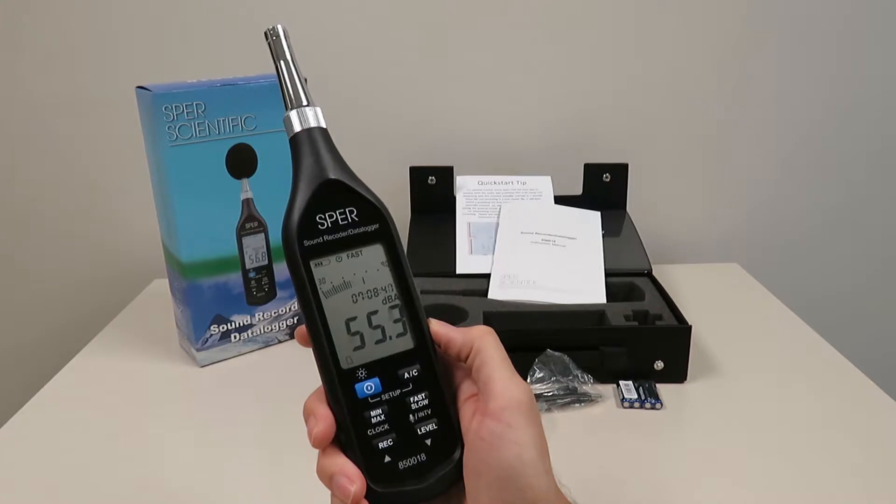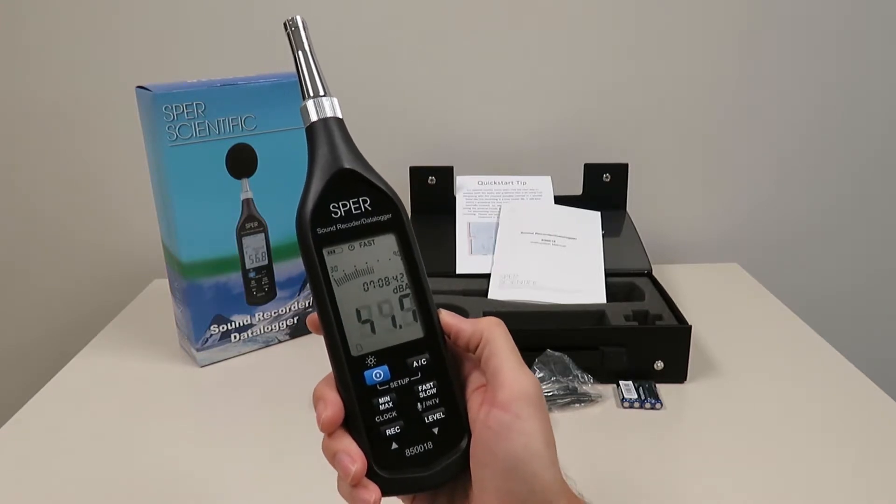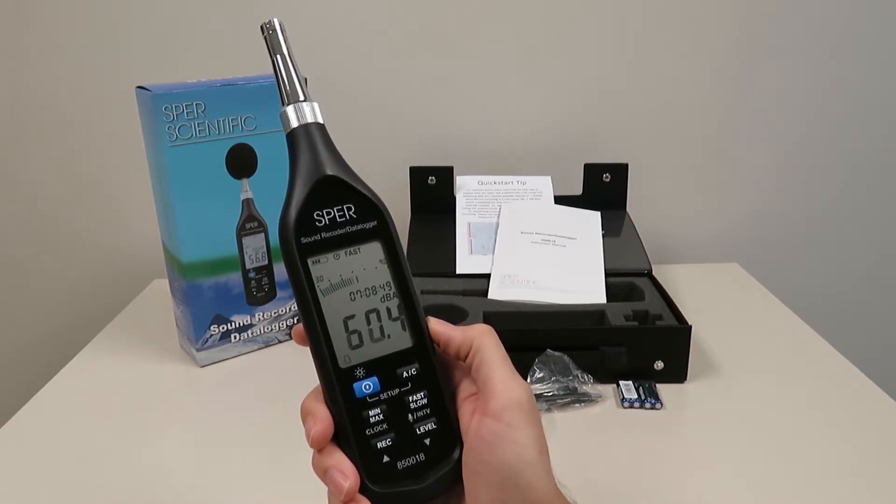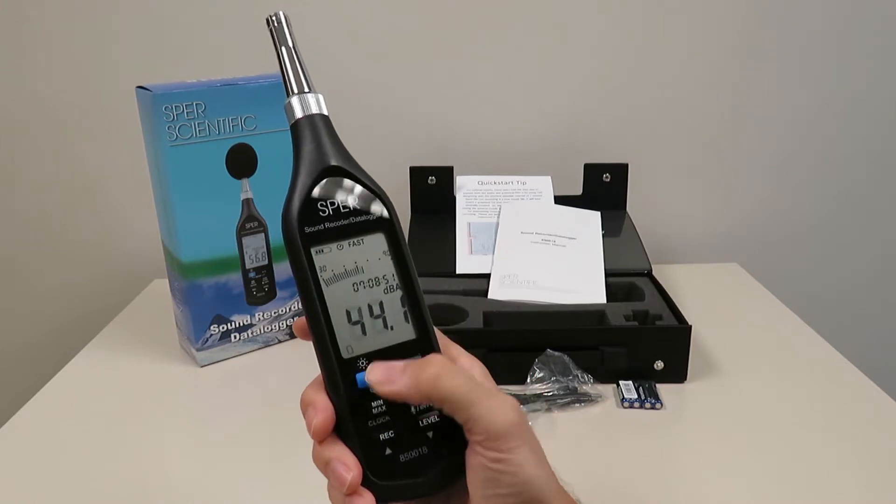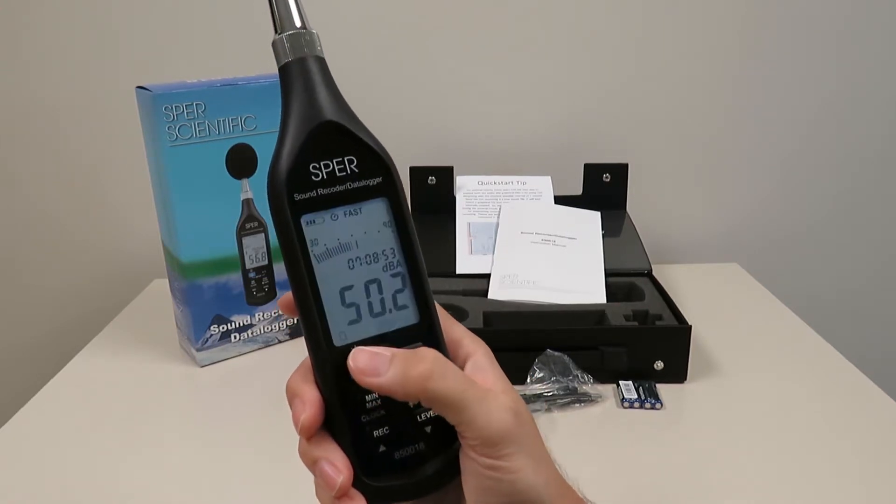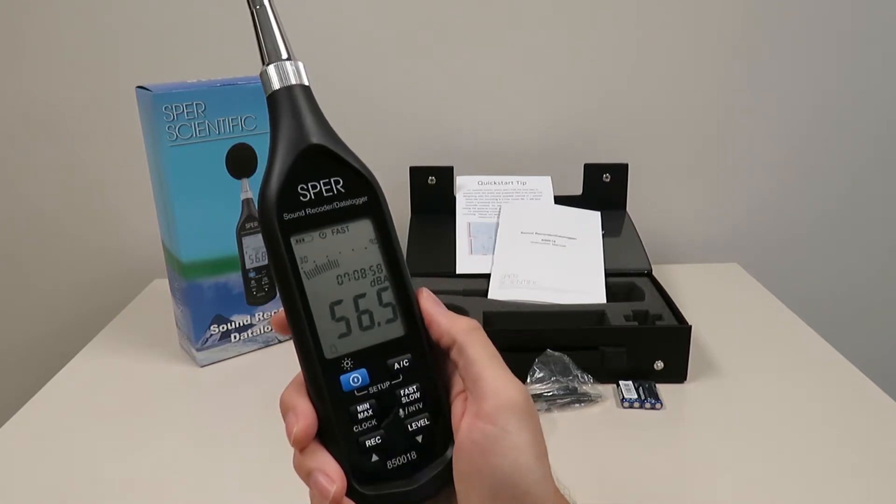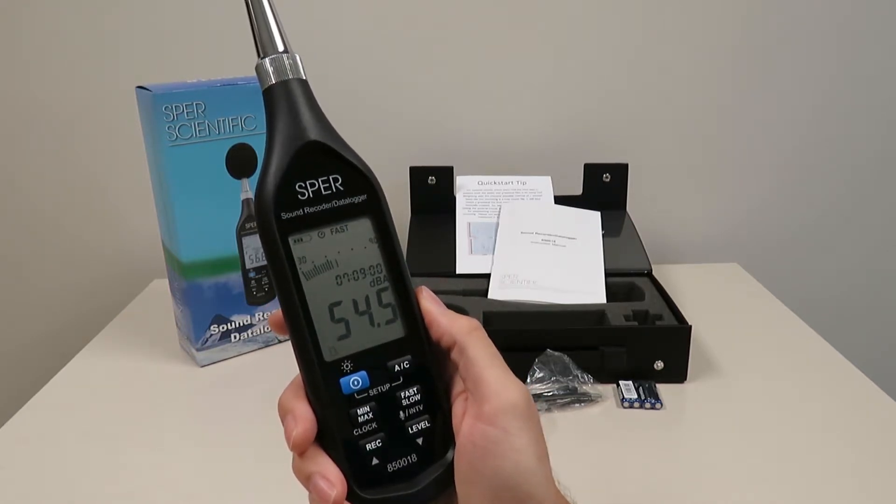The meter records up to 64,000 records complete with date and time stamp that can be stored in the meter for later download and analysis. All test parameters are simultaneously displayed on a large bright backlit display. It has a 0.1 decibel resolution and a bar graph.